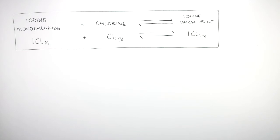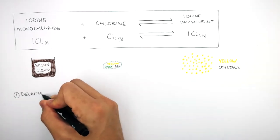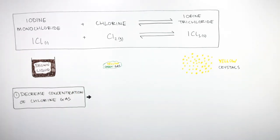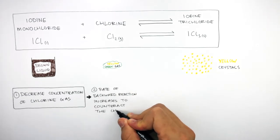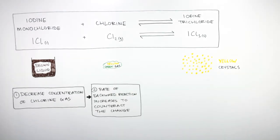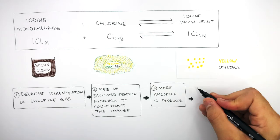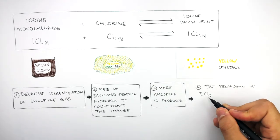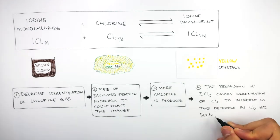We're now going to focus on what happens to the position of the dynamic equilibrium when the concentration of chlorine is decreased. The rate of the backward reaction increases to counteract the change, causing the amount of iodine trichloride to decrease as it turns back into chlorine, causing the amount of chlorine to increase. So the decrease in chlorine has been cancelled out.